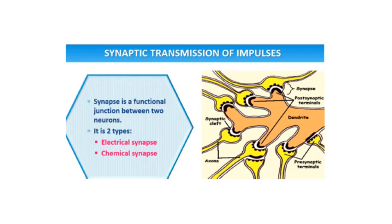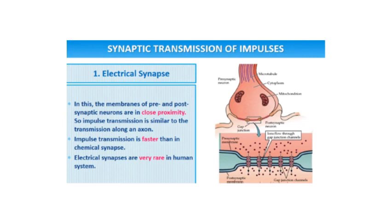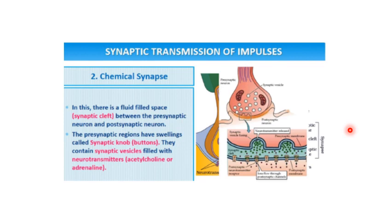Let us understand the synaptic transmission of impulses. For this, we need to understand what is a synapse. A synapse is a functional junction between two neurons — basically the space between two neurons. It is of two types: electrical and chemical synapse. In an electrical synapse, the membranes of pre- and post-synaptic neurons are in close proximity, so impulse transmission is similar to transmission along an axon. Impulse transmission is faster than in chemical synapse, and these are very rare in the human system. In a chemical synapse, there is a fluid-filled space called the synaptic cleft between the pre-synaptic neuron and the post-synaptic neuron. The pre-synaptic neurons have swellings called synaptic knob buttons. They contain synaptic vesicles which are filled with neurotransmitters such as acetylcholine or adrenaline, and the messages go through these chemicals.